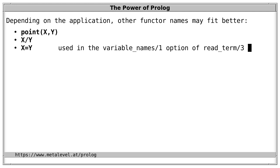This representation is, for example, used in the variable names option of read_term and write_term. So it's not that every time a pair-wise combination of terms occurs, we must use dash to denote this combination, because we are completely free to use any functor we like.